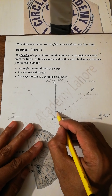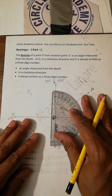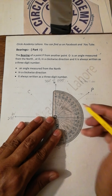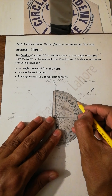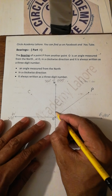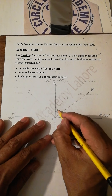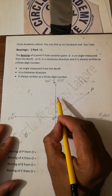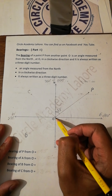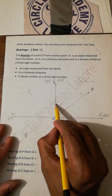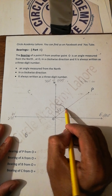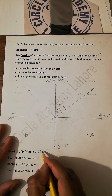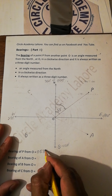Now you have to measure the angle with the help of the protractor. This angle is almost 53 degrees. So the bearing of P from O in the clockwise direction is 053 degrees.